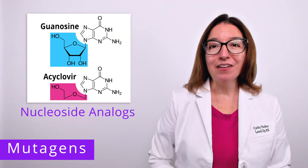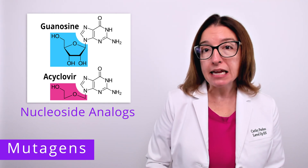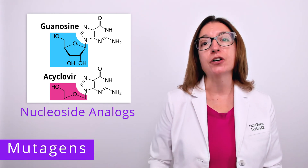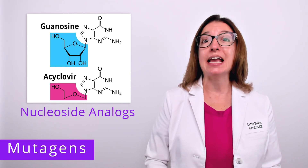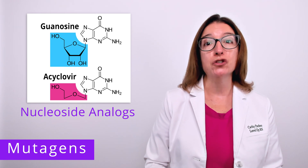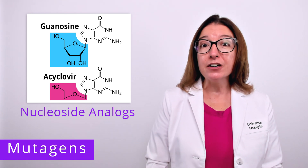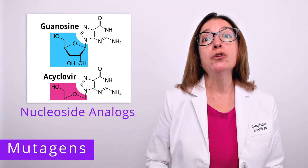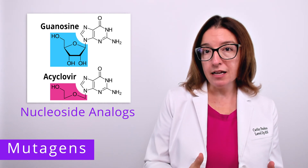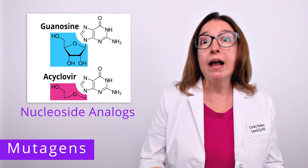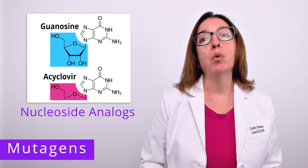A nucleoside analog is a chemical that is structurally similar to a normal nucleotide base that is incorporated into the DNA during replication. An example of a nucleoside analog is the antiviral agent acyclovir, which is used to treat herpes simplex virus as well as varicella zoster virus. Acyclovir is structurally similar to a nucleoside found in the virus's DNA, so it gets incorporated into the viral DNA where it throws a wrench in the viral replication process, causing issues with base pairing and point mutations.